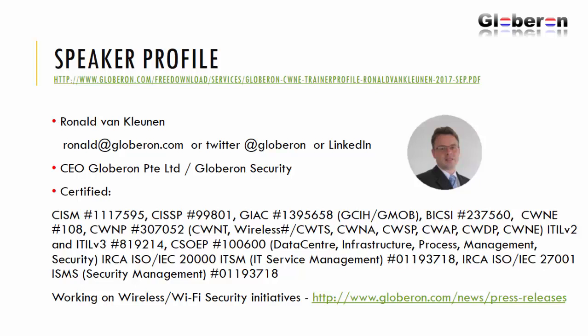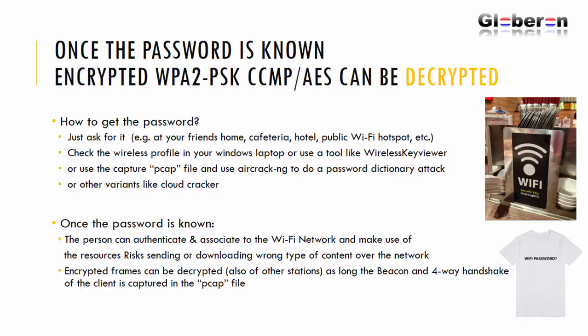If you want to know more, go to the links shown here, where you see other security- and Wi-Fi-related publications. Once the password is known, all traffic can be decrypted. How do you get that password? You can simply ask for it — at a friend's home, cafeterias, hotels, or public Wi-Fi hotspots it's not difficult. Other ways include using a tool like the Wireless Key Viewer on someone's laptop, or looking into the wireless profile on a laptop or mobile phone. You can also use protocol capture tools and AircrackNG to do a password dictionary attack — a large list of passwords is tried against the encryption on the access point.